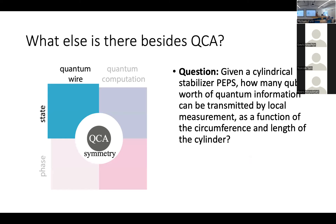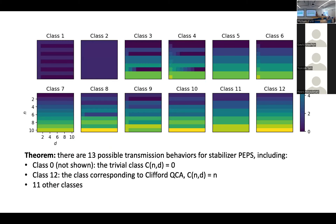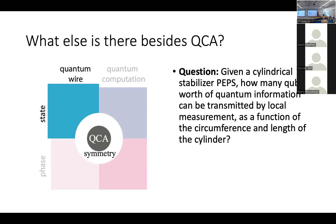We're specifically starting at the simplest level to get a handle on this problem — quantum wire in a completely specified state, not looking at phases, just creating long-range entanglement. The specific question is: if we have one of these stabilizer PEPS, how many qubits of entanglement can we create? What are all the possible forms of the transmission capacity function C(N, D)?